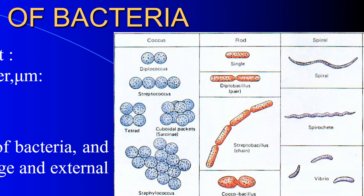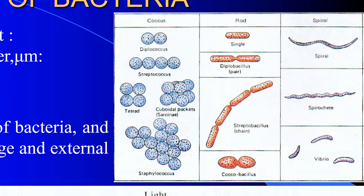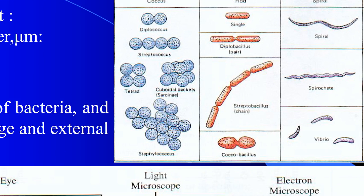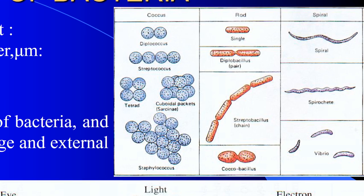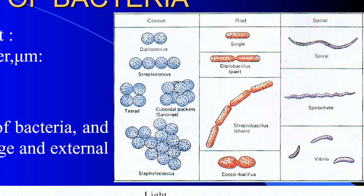Spirilla — the vibrio and spirilla shapes. Also a long vibrio structure. This is the vibrio corner-like structure, the beam-like structure. This is the spirochete and the vibrio structure.